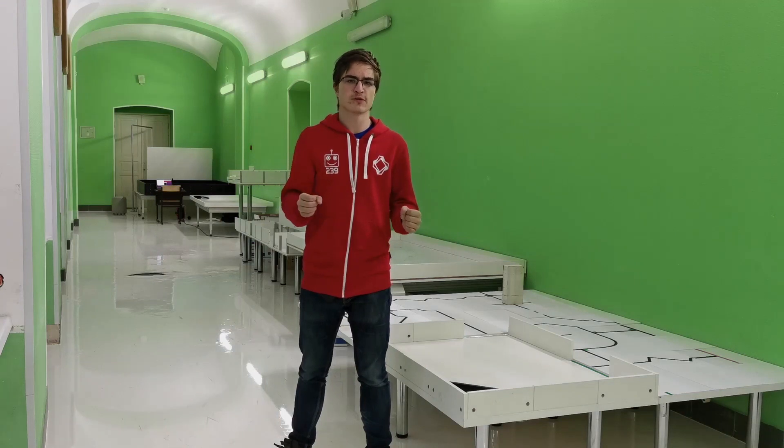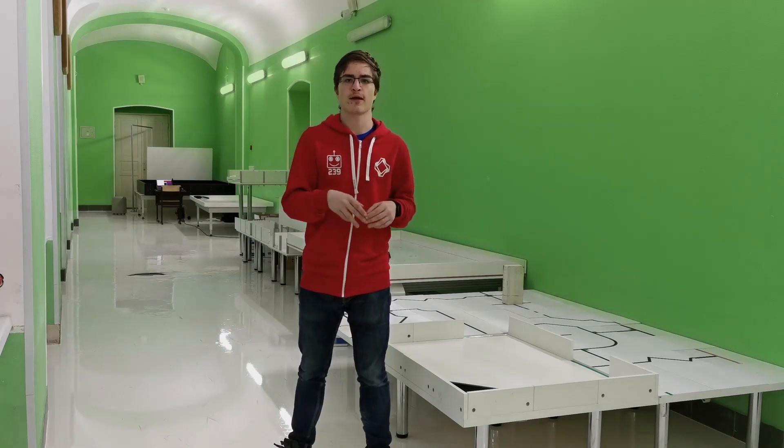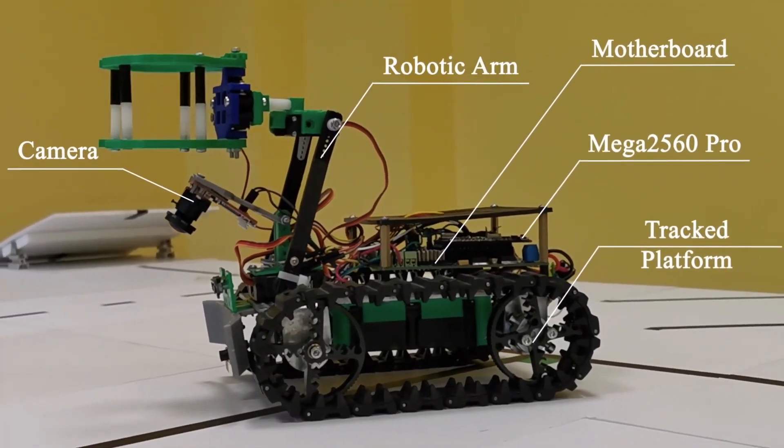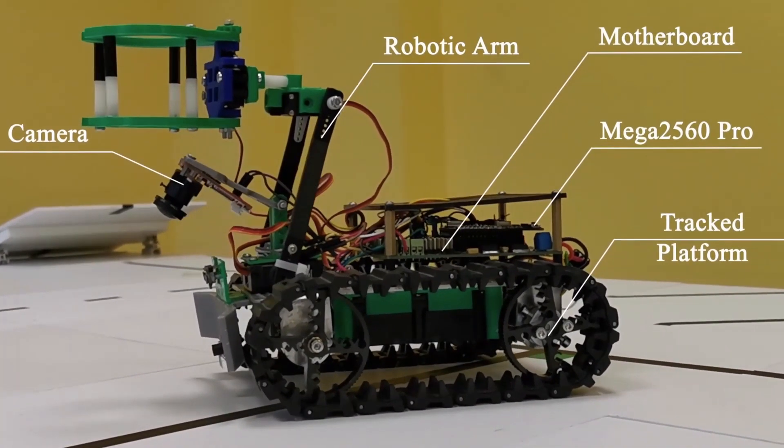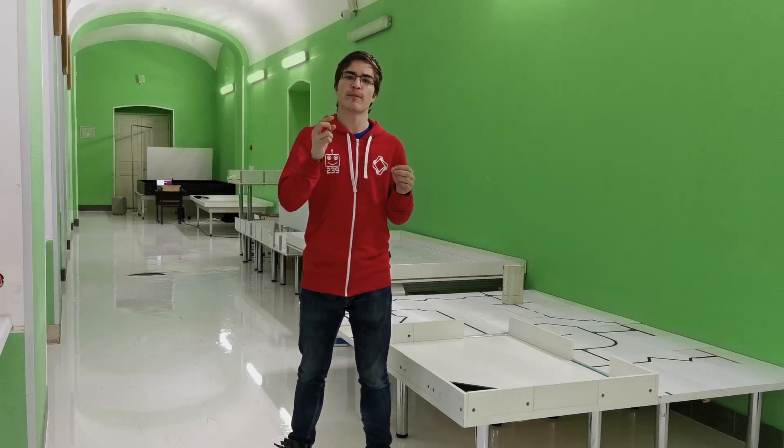Our robot consists of many elements, like a tracked platform with a metallic frame, a motherboard, a microcontroller Mega 2560 Pro Mini, a robotic arm and OpenMV programmable camera.